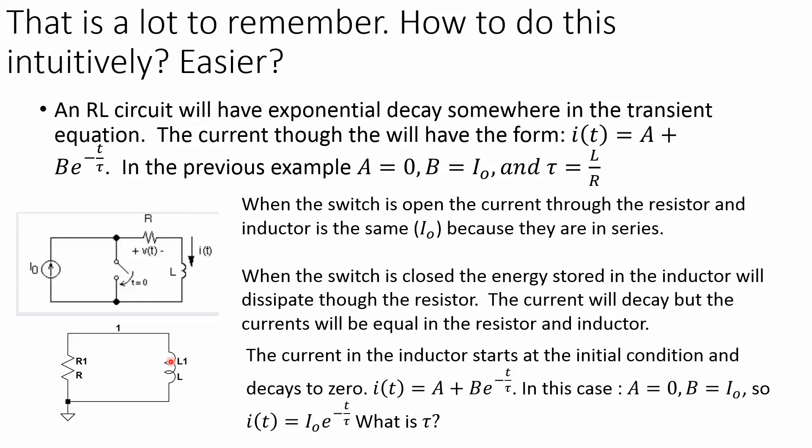Well I know that this is a first-order circuit, there will be exponential decay somewhere and it will have this form, right? And A is going to be zero because it's going to start at something and go down. There's no power supply or anything, it just will decay towards zero.